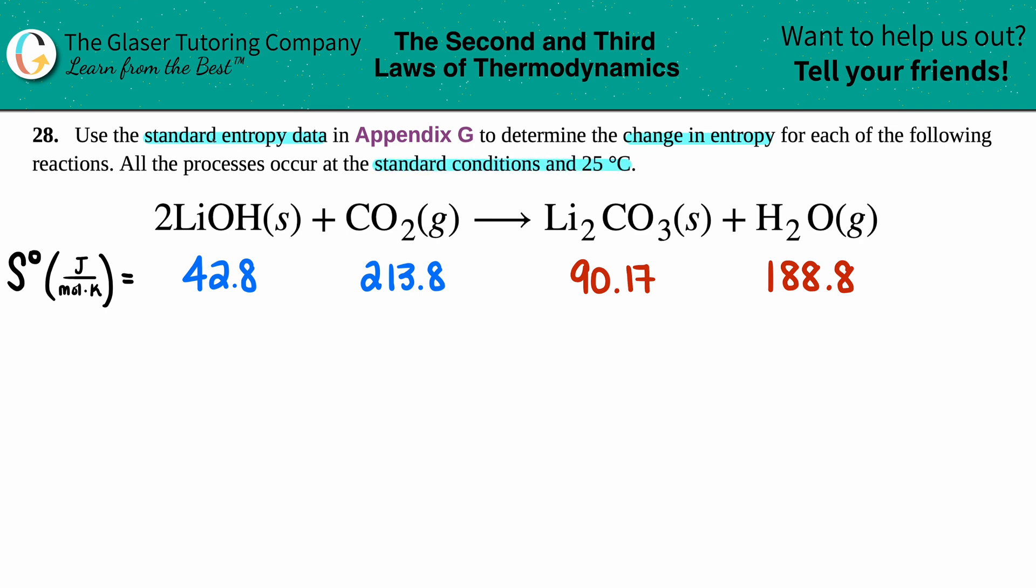Okay, so in this case we have 2LiOH solid plus CO2 gas yields Li2CO3 solid plus H2O gas. In this case we just have to find the change in entropy, and change in entropy is a delta, that's a change value, final minus initial of S.